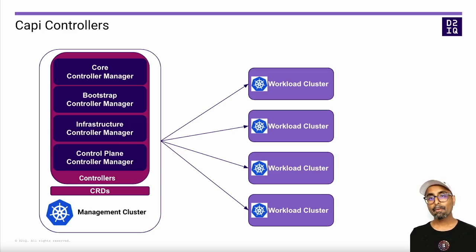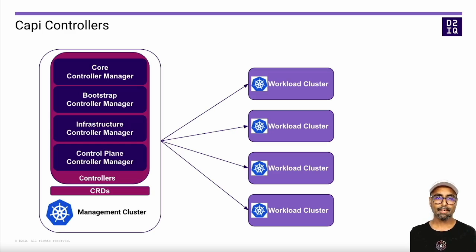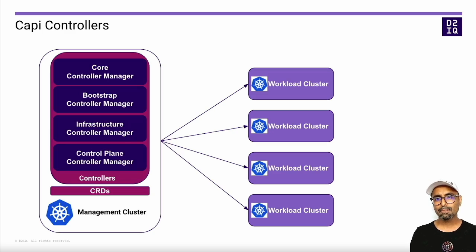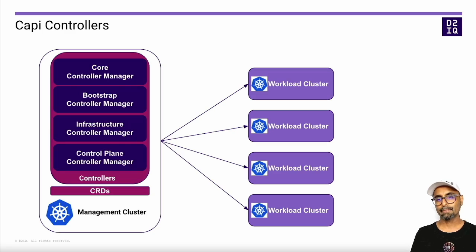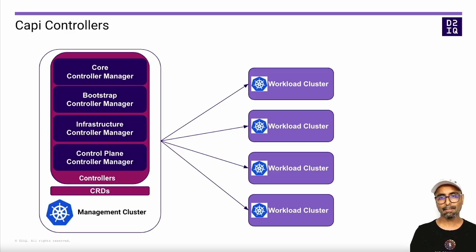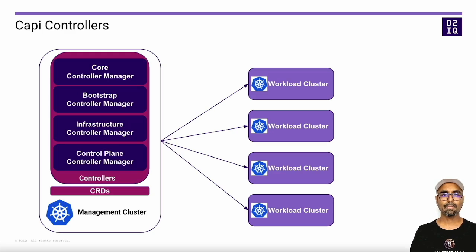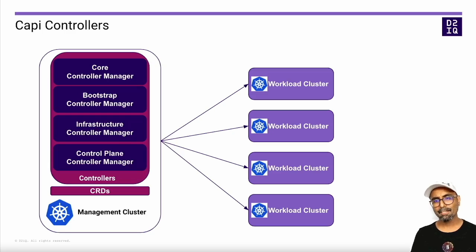The core providers are responsible for setting owner references, cleaning up objects, changing state of resources, and setting other references like bootstrap config in machine resources. Some of the controllers in this category are cluster, machine, machine set, machine deployment, etc. The bootstrap provider handles the bootstrapping process of the cluster. The default bootstrap provider is Cluster API Bootstrap Provider kubeadm, commonly known as CABPK, and as the name suggests, it uses kubeadm to perform cluster bootstrapping.